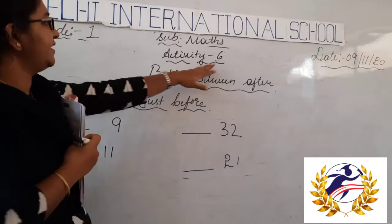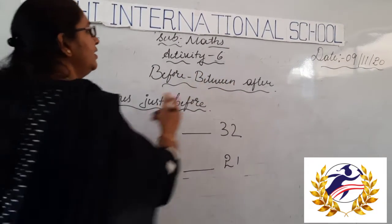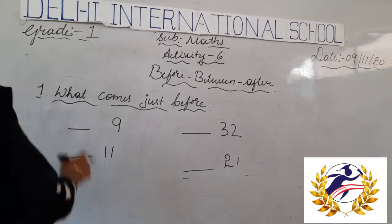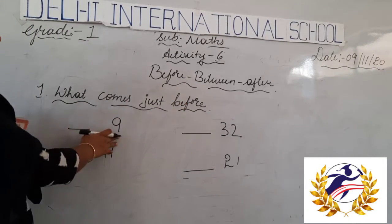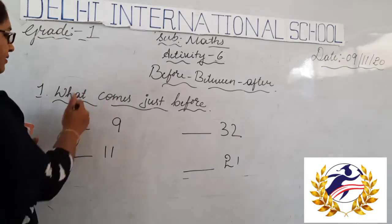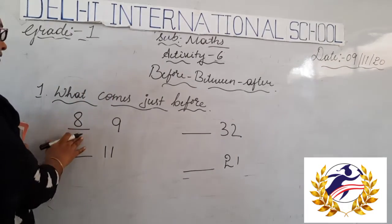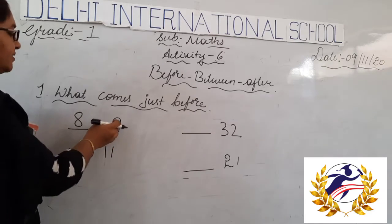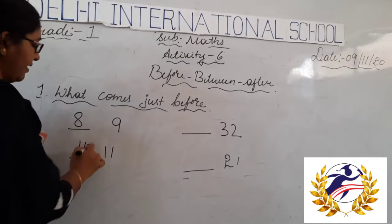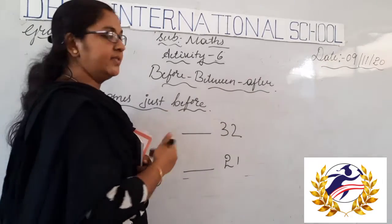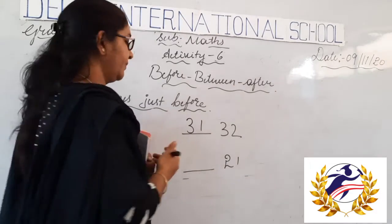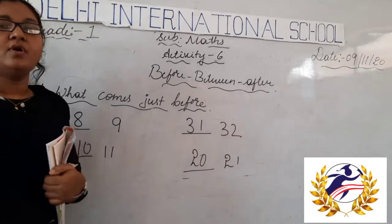Next, we will move on to activity 6: before, between, and after. What comes just before a number? What comes before 9? Count back — that is 8. 8 comes just before 9. What comes before 11? That is 10. What comes just before 32? That is 31. What comes just before 21? That is 20. This is how we write the before numbers.